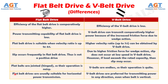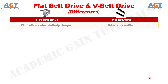Number 12: flat belt drives are usually suitable for horizontal power transmission, whereas V-belt drives are preferred for transmitting power in any direction, even when the belt is vertical. Number 13: flat belts are also relatively cheaper, whereas V-belts are costlier.